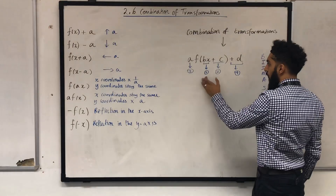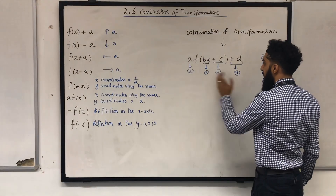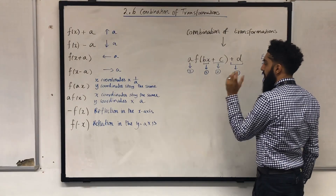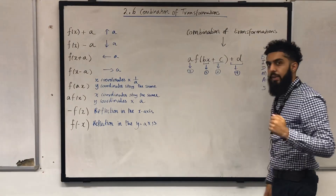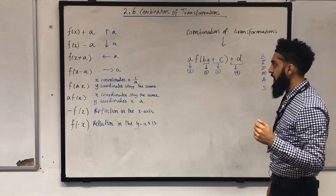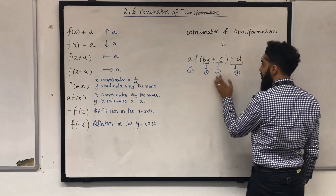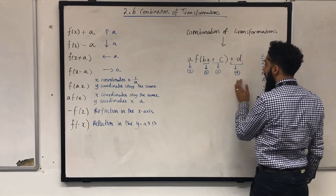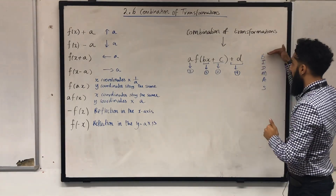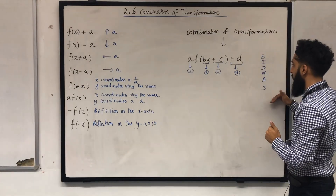So you've got four different transformations and the order is one, two, three, four using BIDMAS.